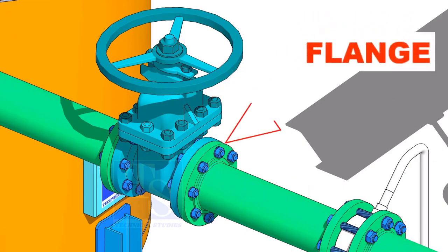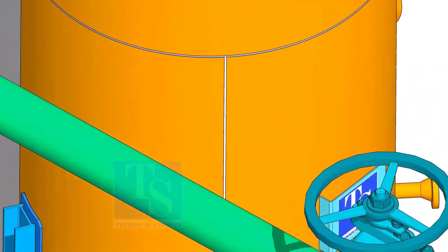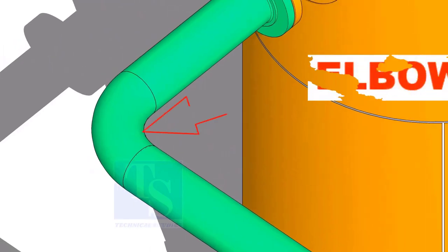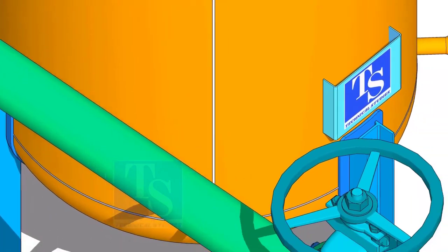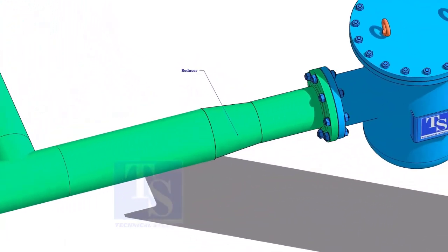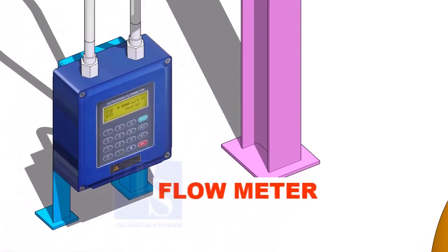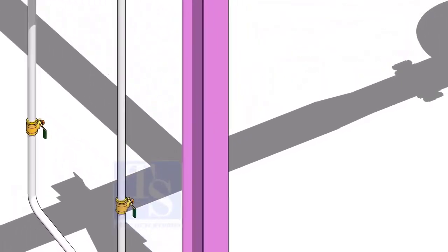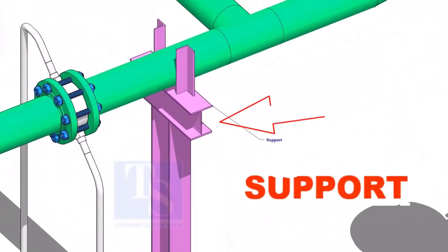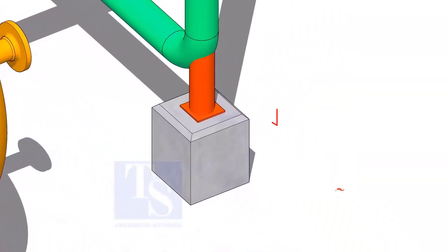Valve. Flange. Elbow. Elbow Tee. Reducer. Flow Meter. Support. Stanchion.